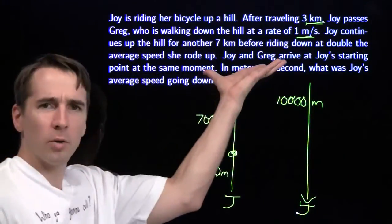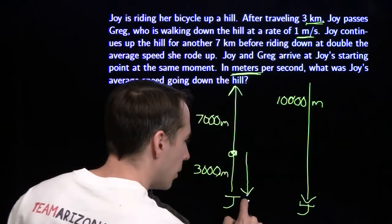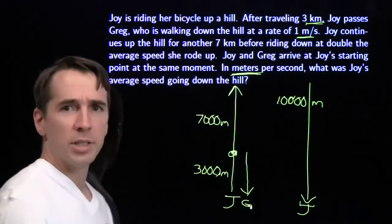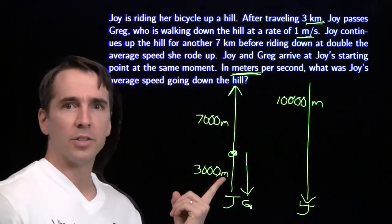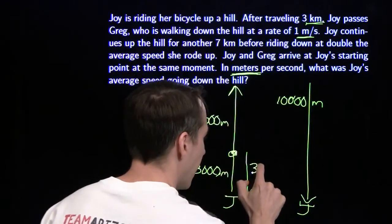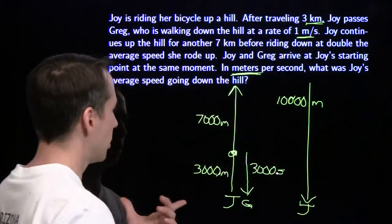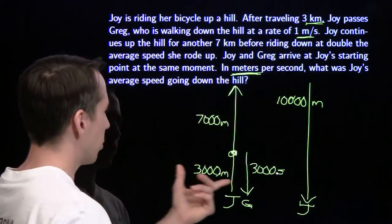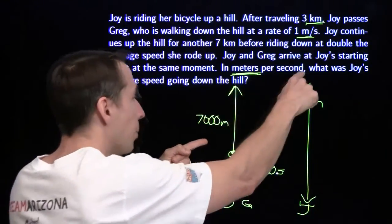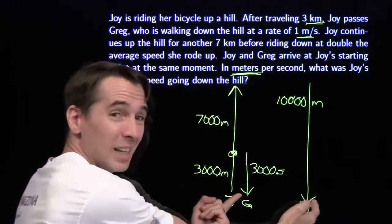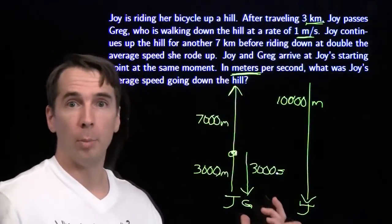What's going on with Greg? All we know about Greg is this last little bit of his trip. He meets Joy right there, and then he goes down this last 3,000 meters. He's going one meter per second for those 3,000 meters, so he has to be walking for 3,000 seconds in order to cover the 3,000 meters. That's how long he walks from here to here. And during that time, Joy goes all the way up and all the way back down because they meet here at the same time. So we know the total time of her whole trip up and down.